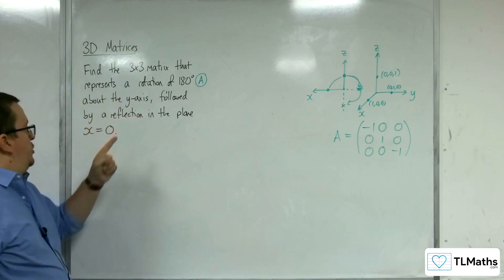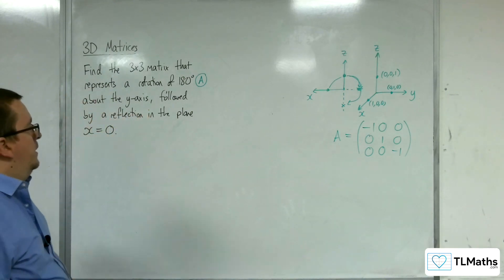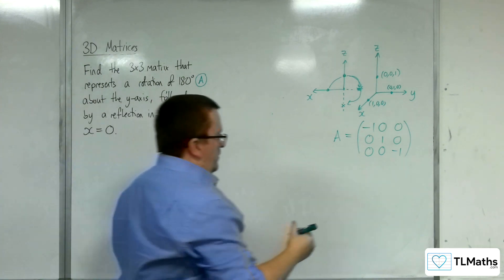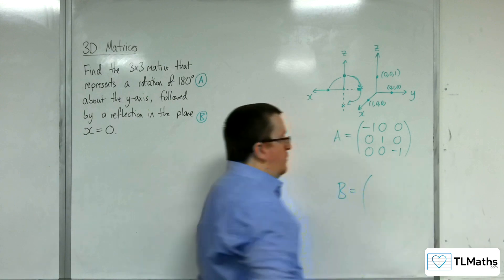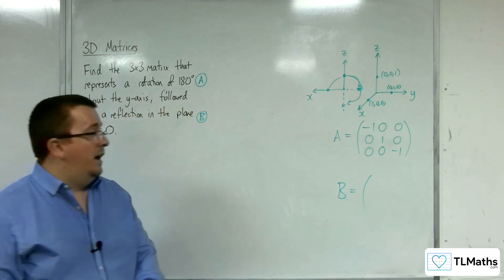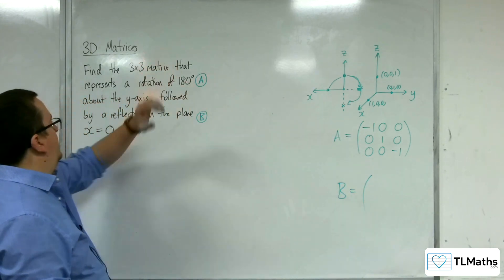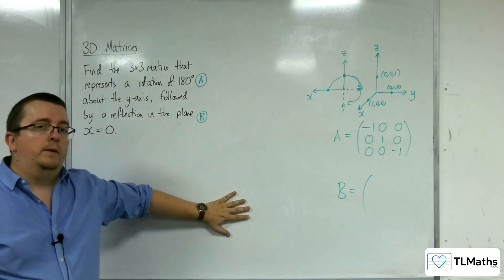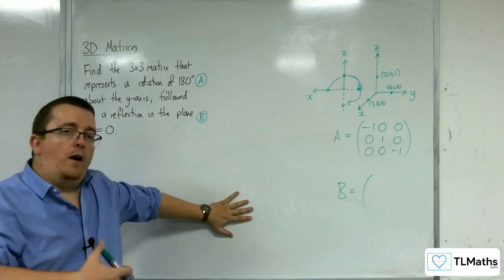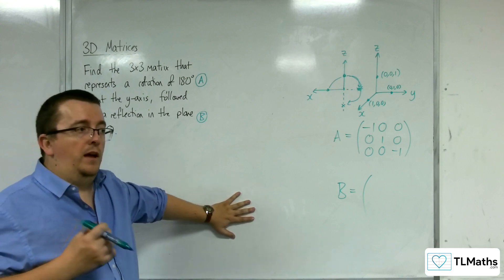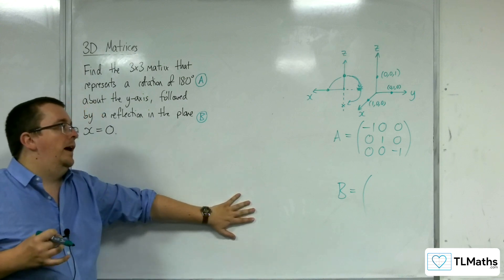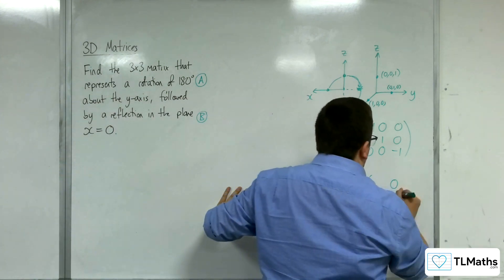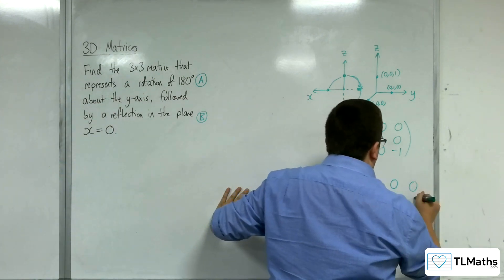Followed by a reflection in the plane x equals 0. So, let's call that B. Now, matrix B, from our reflections, we know that if we're reflecting in the plane x equals 0, that's the y-z plane. And so, the y and the z coordinates, the points that are just on those axes, remain fixed. So, 0, 1, 0, 0, 0, 1.